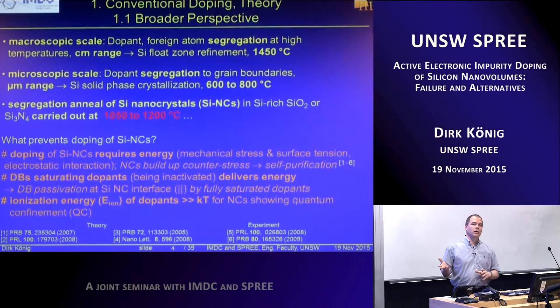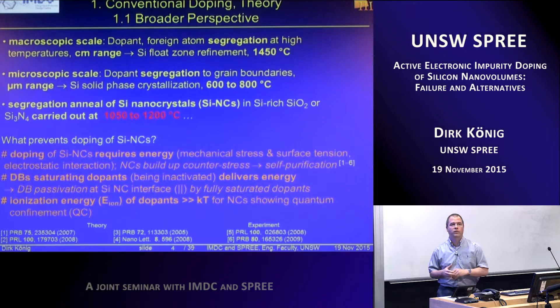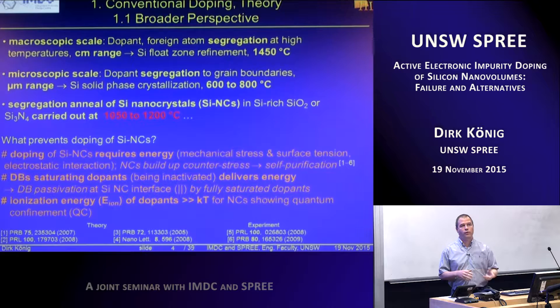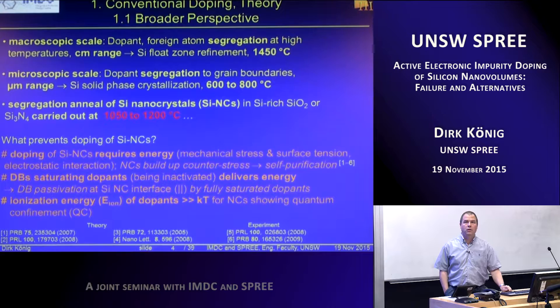The incorporation of dopants into lattice sites of silicon nanocrystals competes with full saturation of all bonds, meaning you get dangling bonds and defects saturated, so the total binding energy of the system increases, making it more stable. And even if you manage to build a donor into a lattice site of silicon nanocrystals, you still have to achieve a donor ionization energy on the order of the thermal energy at room temperature. For nanocrystals showing quantum confinement, this condition is basically not reached.